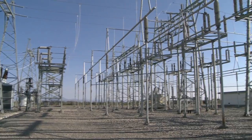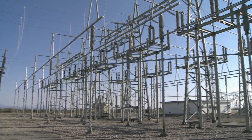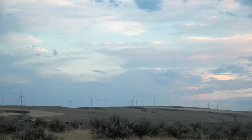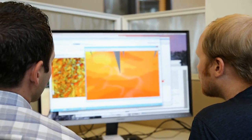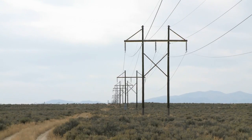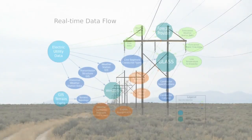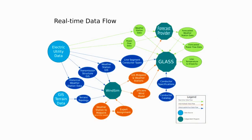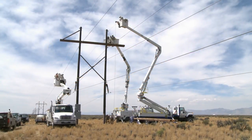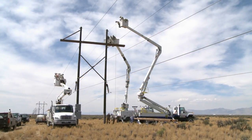We look forward to further refining this methodology and enhancing its capabilities in the future. With two industry-supported pilot projects in Idaho and a third in Alberta, INL has developed an industry-informed solution to monitor conditions along hundreds of miles of transmission lines. GLASS offers utilities an all-in-one tool to relieve electricity congestion, add reliability, and defer construction of new transmission lines.